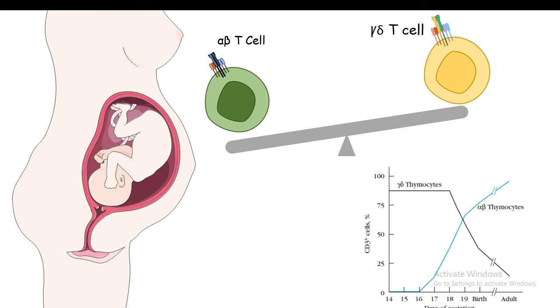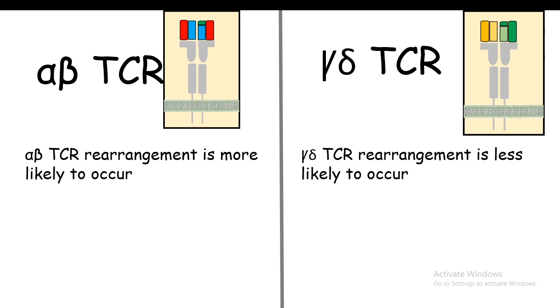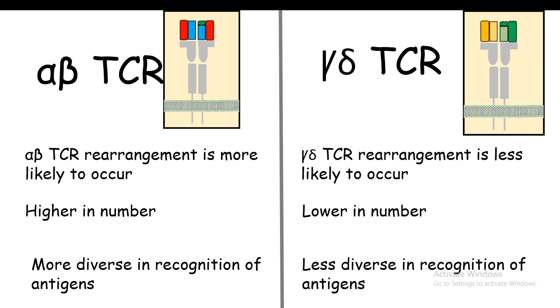Let's compare these two: alpha-beta T cells and gamma-delta T cell receptors in a little bit more detail. Alpha-beta TCR rearrangement is more likely to occur compared to gamma-delta TCR rearrangement. Definitely, alpha-beta T cells are higher in number compared to gamma-delta T cells, and ultimately alpha-beta TCRs are more diverse. In terms of antigen recognition, they play crucial roles, not gamma-delta TCR, but gamma-delta TCR has their defined role in the prenatal phase, in the gestational phase. So both of these combinations are important.